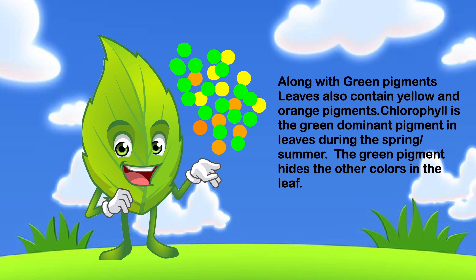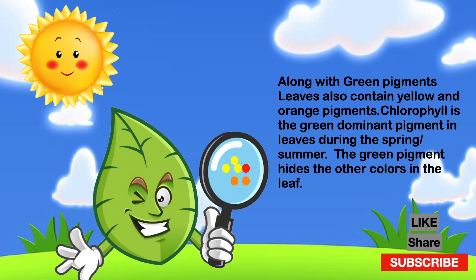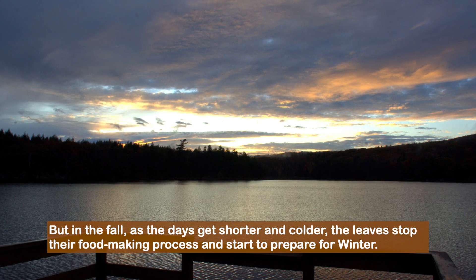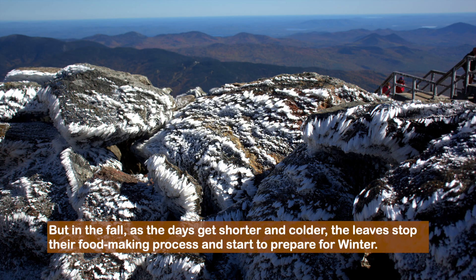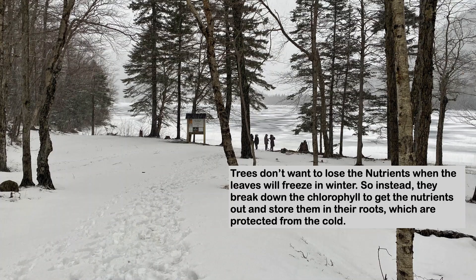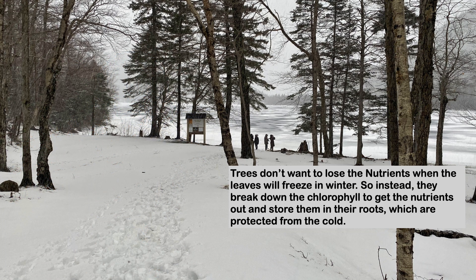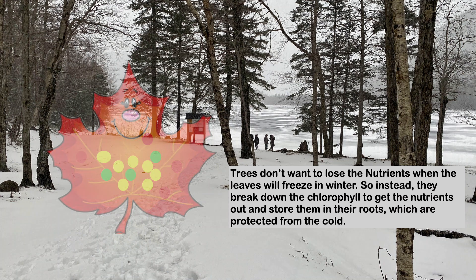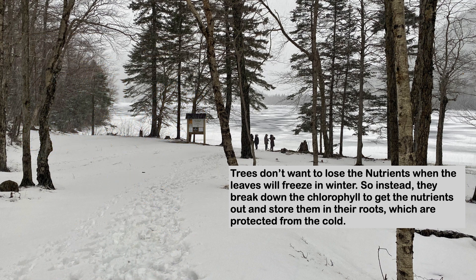Along with green pigments, leaves also contain yellow and orange pigments. Chlorophyll is the dominant green pigment in leaves during the spring and summer. The green pigment hides the other colors in the leaf. But in the fall, as the days get shorter and colder, the leaves stop their food-making process and start to prepare for winter. Trees don't want to lose the nutrients when the leaves will freeze in winter. So instead, they break down the chlorophyll to get the nutrients out and store them in their roots, which are protected from the cold.